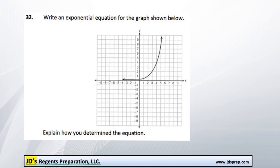We're going to start off by looking at the graph and trying to plot some points that we can identify. The first one I notice here is (2, 1). Also right beside it is (3, 2). And right up here we have (4, 4). And it looks like there's one more — it's kind of hard to spot — but this point right here, which is (5, 8).